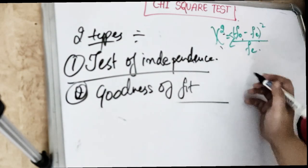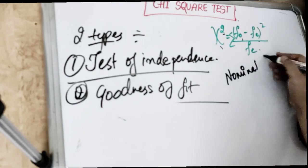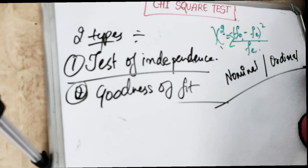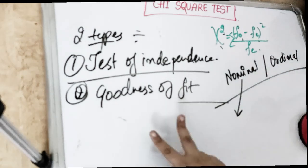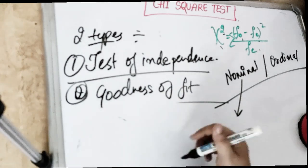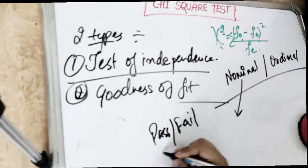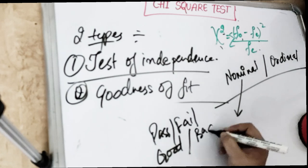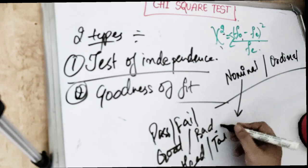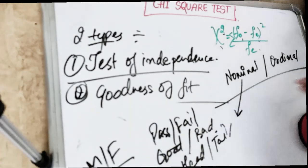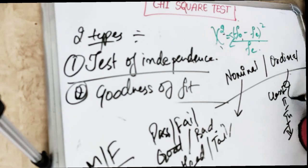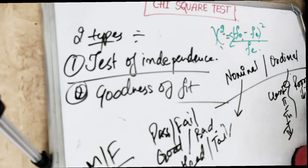The chi-square test is usually done for nominal or ordinal data. Nominal data involves categories that are roughly equal — like pass-fail, good-bad, or male-female. Ordinal data has an inherent order — like Class 1, Class 2, Class 3, Class 4, or oral hygiene status going from poor to fair to good. So that is our ordinal data.